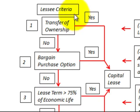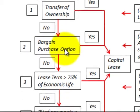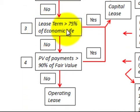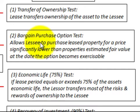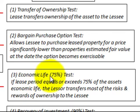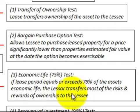Now let's better define the test criteria for the lessee. Number one, the transfer of ownership test: the lease transfers ownership of the asset to the lessee. Number two, the bargain purchase option test: it allows the lessee to purchase the lease property for a price significantly lower than the property's estimated fair value at the date the option becomes exercisable. Number three, the economic life or 75% test: the lease period equals or exceeds 75% of the asset's economic life, meaning the lessor transfers most of the risks and rewards of ownership to the lessee.